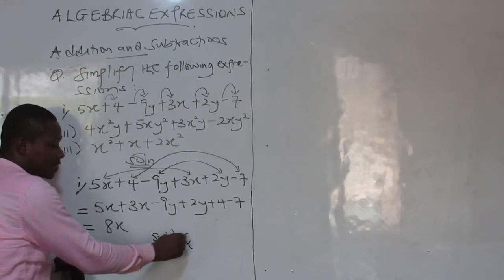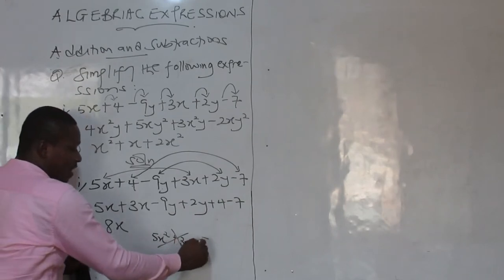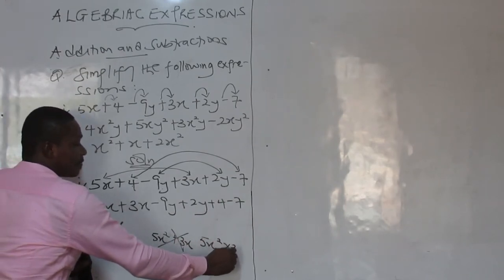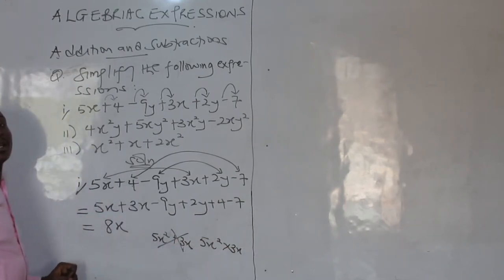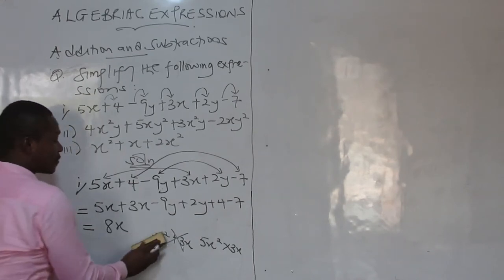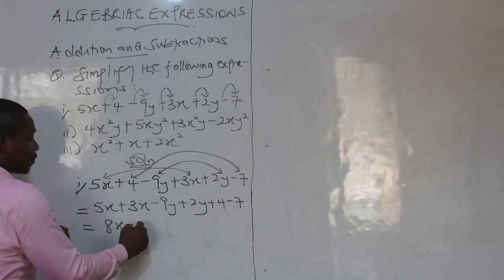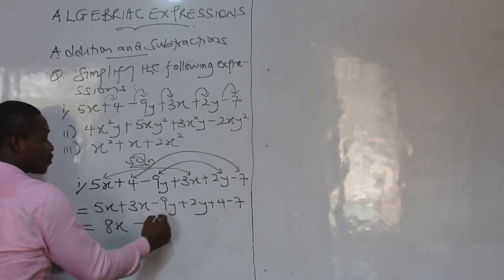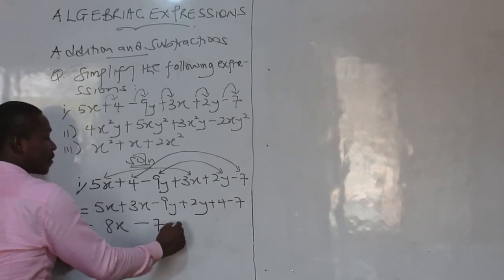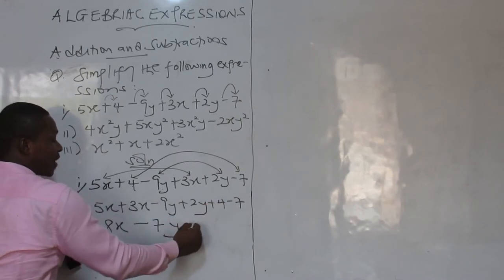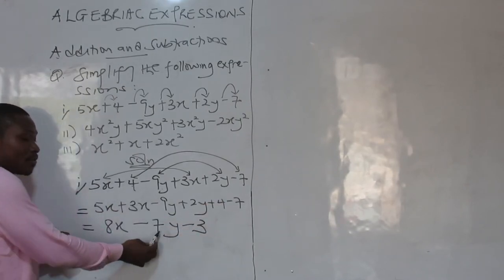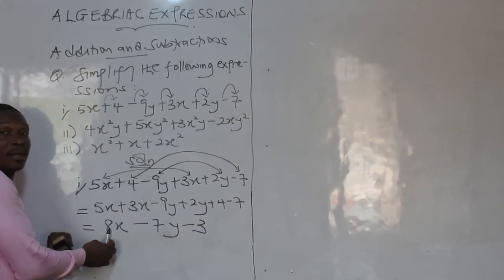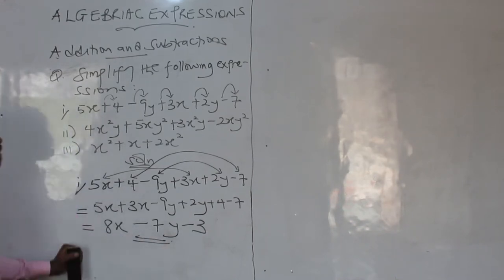We can't add this. It's not possible. But we can multiply this. Multiplication knows no boundary. So, minus 9 plus 2, you get minus 7y. For minus 7, you get minus 3. I cannot subtract 7y from 8x. It's not going to work. So this happens to be my answer.